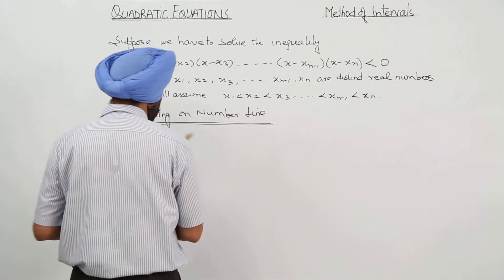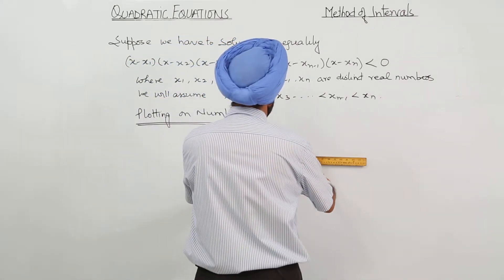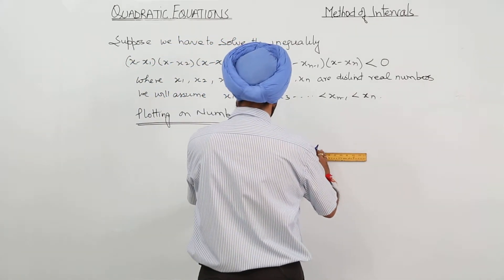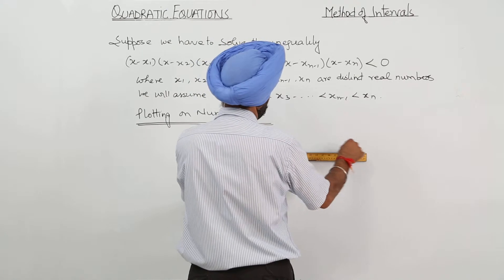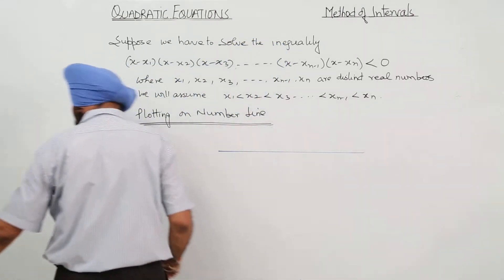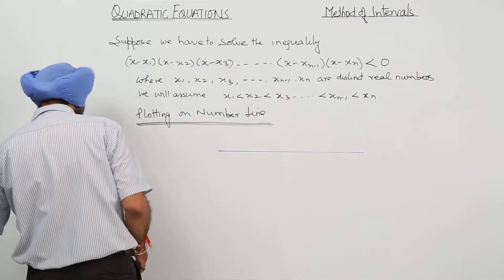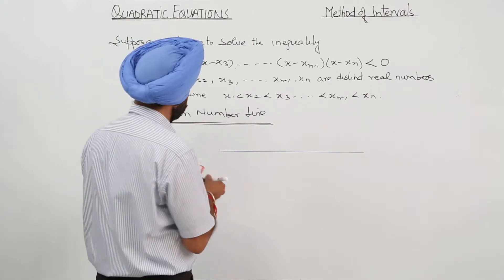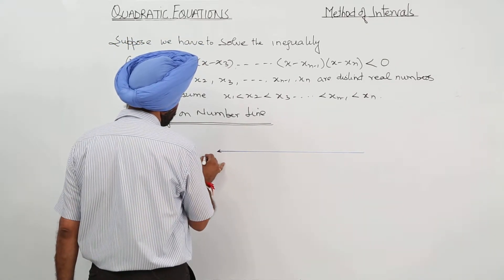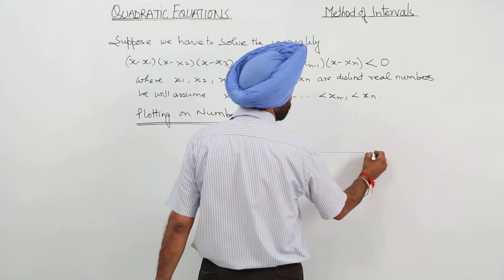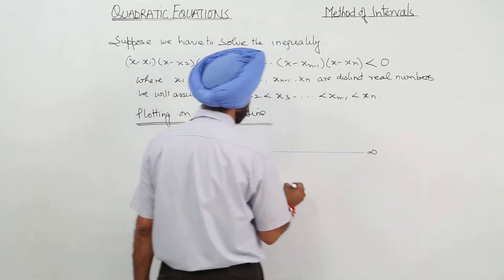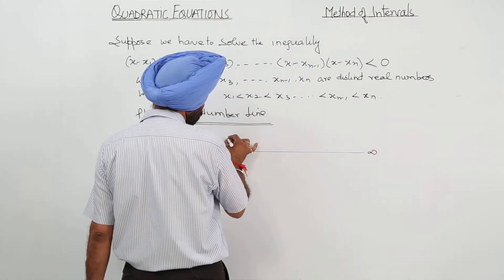Suppose we are having a number line. This part is negative of infinity. This part is positive of infinity. So, what we are going to do?